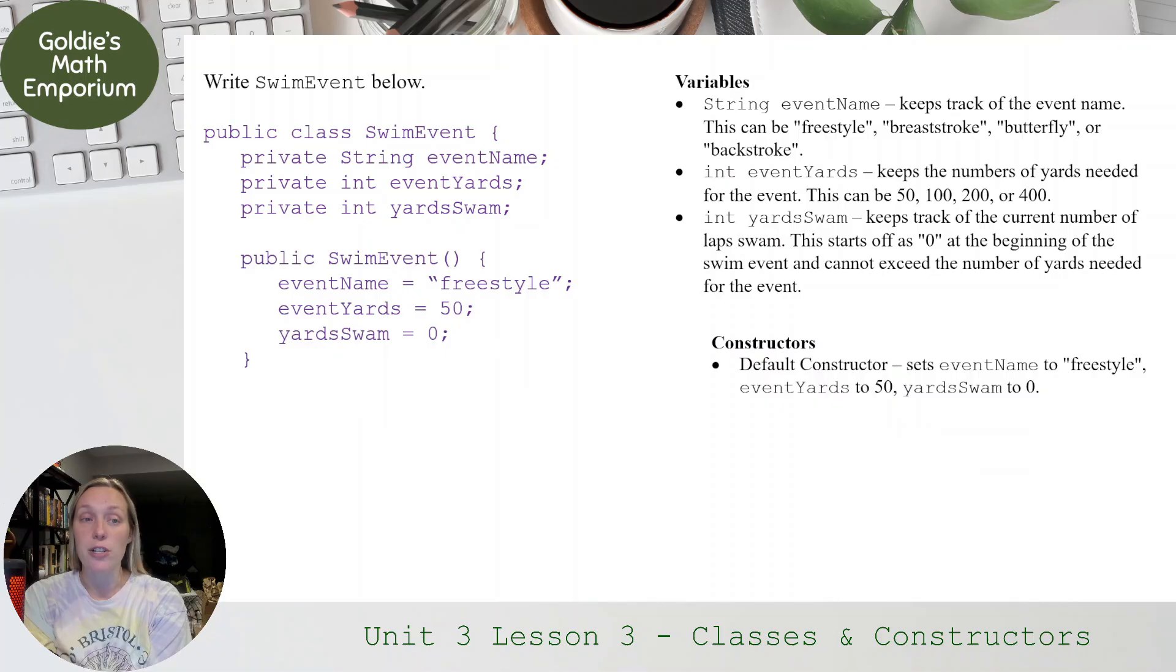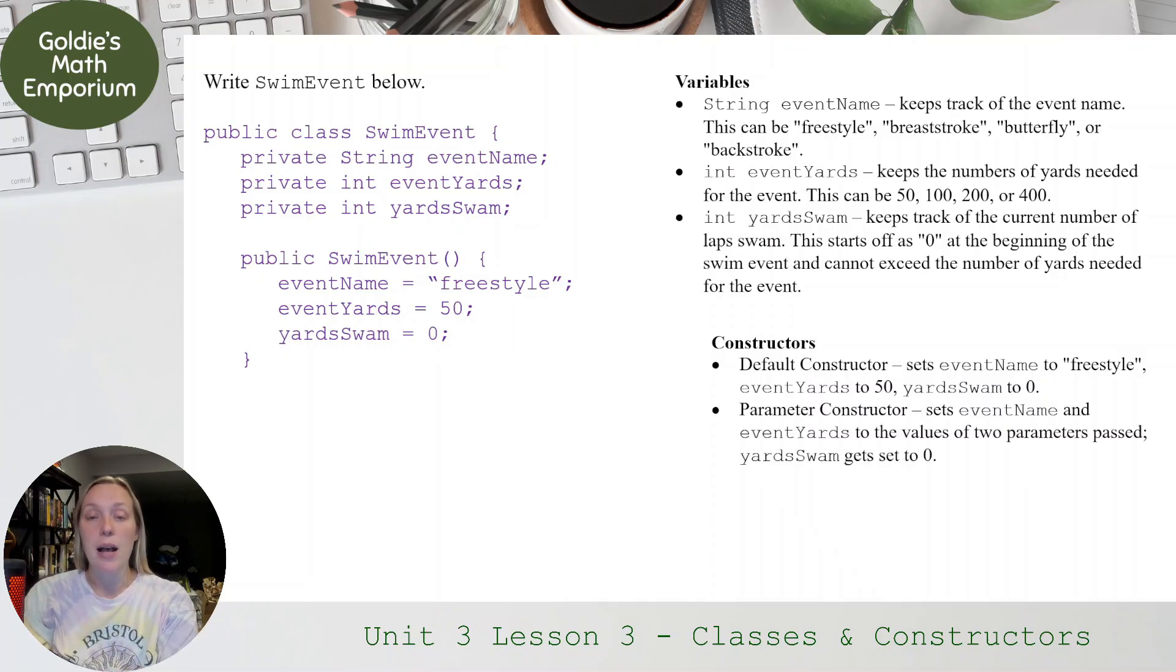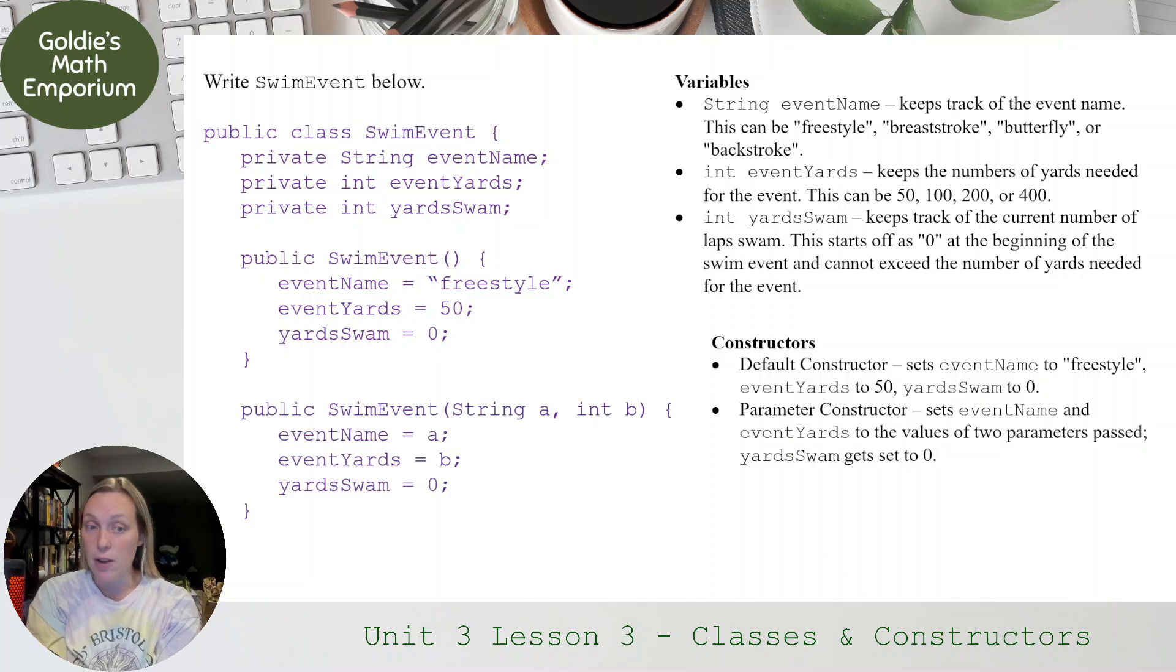Now my constructors. The default constructor is pretty straightforward. It's just public SwimEvent, and then eventName, eventYards, and then yardsSwam is zero. My parameter constructor, it accepts two parameters now. So I just call them A and B as my parameters because they're just placeholders, taking the data that it's passed and putting that into eventName and eventYards. And then yardsSwim gets set to zero. So so far, I've taken care of variables and constructors pretty quickly.